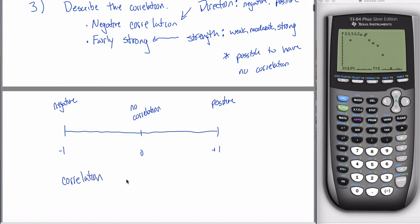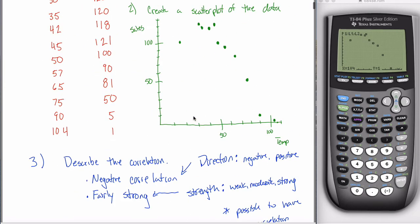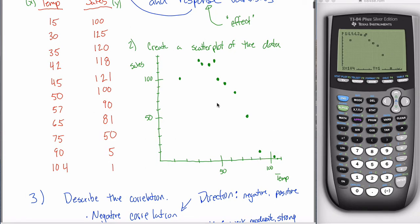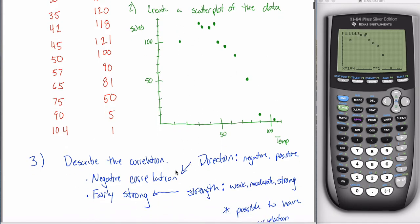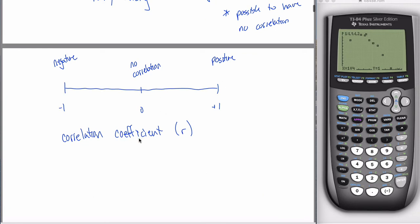A lowercase R indicates your correlation coefficient. If I had to guess the correlation coefficient for our hot chocolate example, I'd say it's negative — we have negative correlation — and probably around negative 0.75, fairly close to negative 1 because it's pretty strong, but not negative 0.99 since that would be almost a straight line. Your calculator has a setting, and if that setting isn't on, it won't output the correlation coefficient.